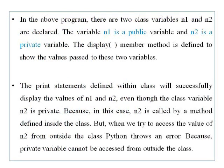In the above program, there are two class variables: n1 and n2. n1 is a public variable and n2 is a private variable. The display method is defined to show the values. Print statements defined within the class successfully display both n1 and n2. However, when we try to access n2 from outside the class, Python throws an error because private variables cannot be accessed from outside the class.